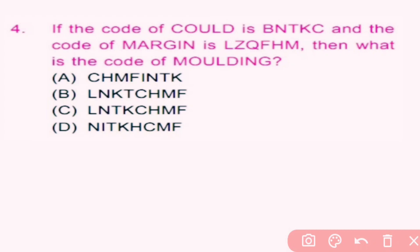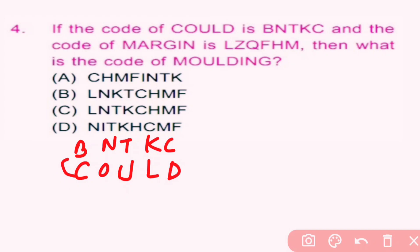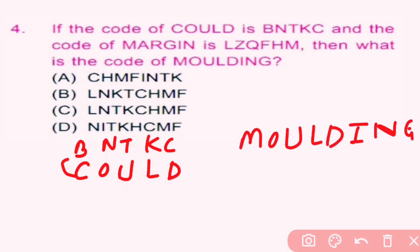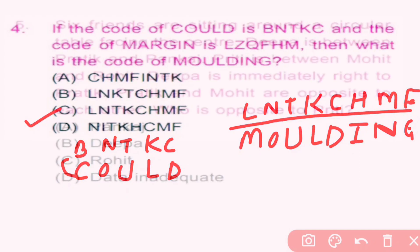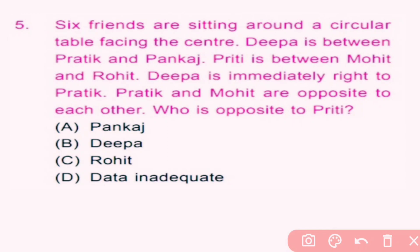Question number 4: If the code of 'good' is 'BNTKC' and the code of 'margin' is 'LZQFHM', what is the code of 'molding'? For coding, they use the previous letter of each character. So for 'molding': previous letter of M is L, O is N, U is T, L→K, D→C, I→H, N→M, G→F. The code will be 'LNTKCHMF'. Here C is the correct answer.